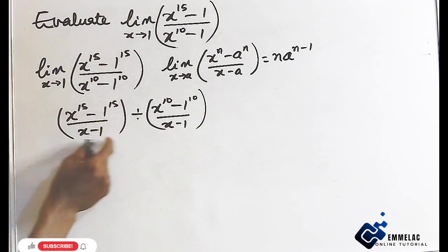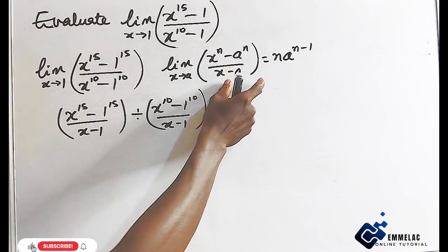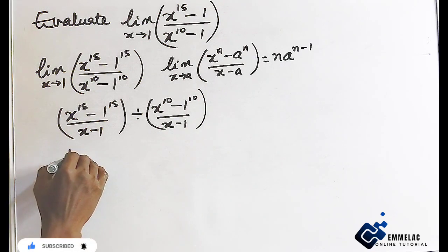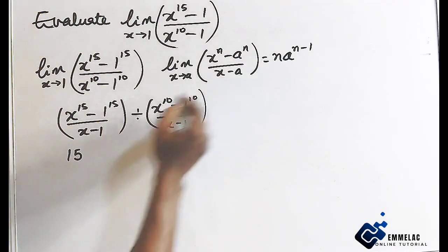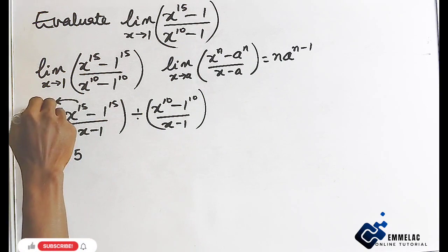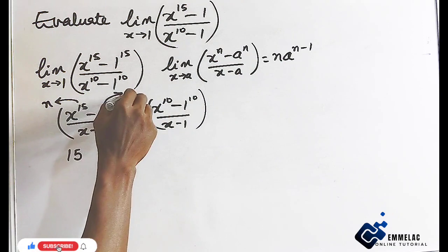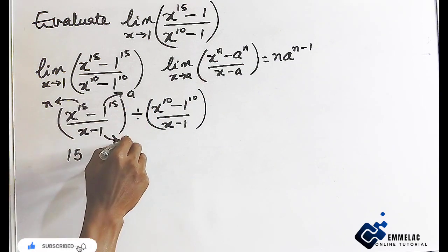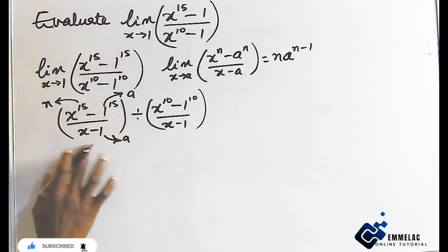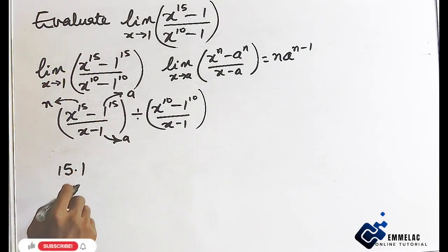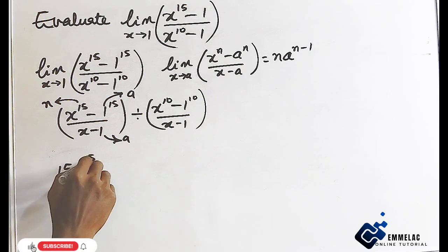This function is now equivalent to the theorem. As x approaches 1, we can see that n is 15 — this is our n according to the rule — and a here is 1, our a. So here we have 15, then times our a which is 1, raised to the power of 15 minus 1.